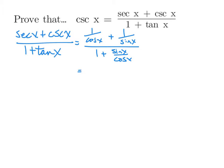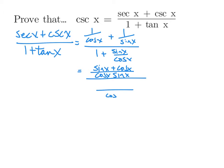Then we can start using our basic algebra — we're going to add a couple fractions together. In the numerator we need a common denominator, which would be cosine times sine. The term above cosine has to get multiplied by sine, and the term above sine has to get multiplied by cosine. In the denominator we need a common denominator of cosine, so the one gets multiplied by cosine, giving us cosine of x plus sine of x.